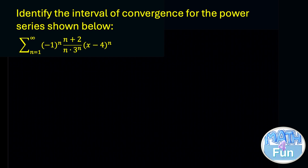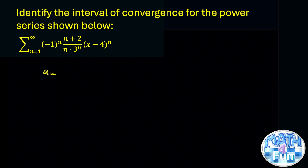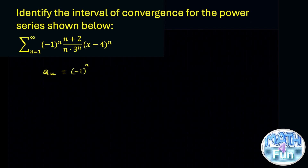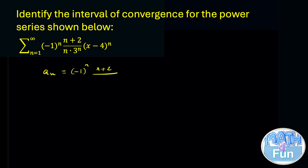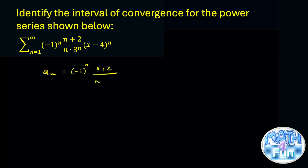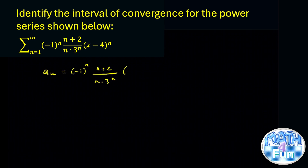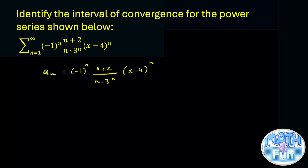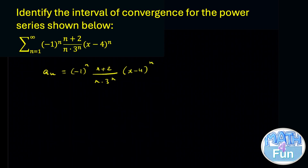Let's write a_n equal to minus 1 to the power n, into n plus 2, over n, multiplied by 3 to the power n, into x minus 4 to the power n.